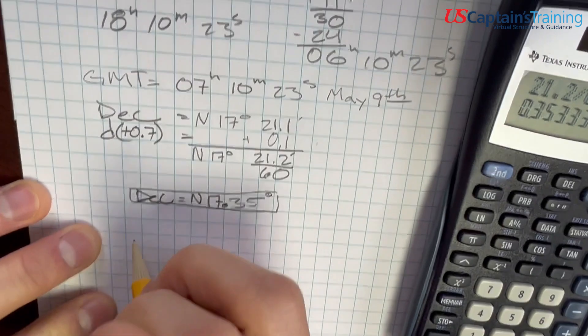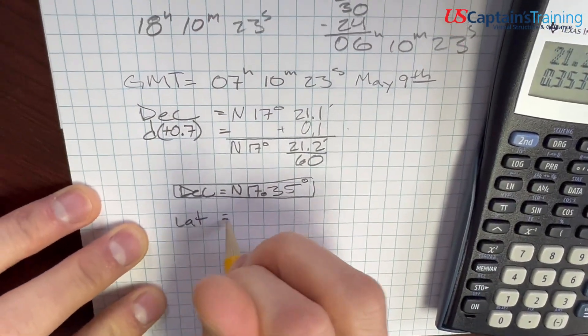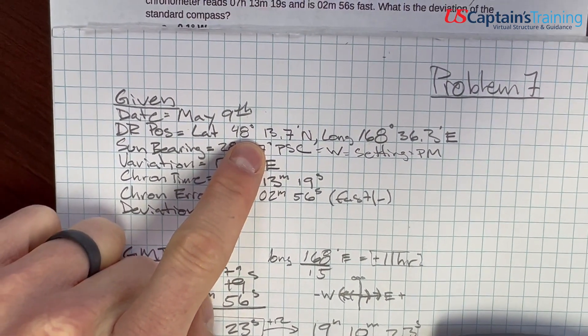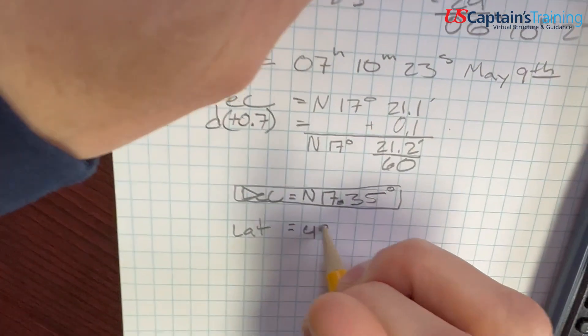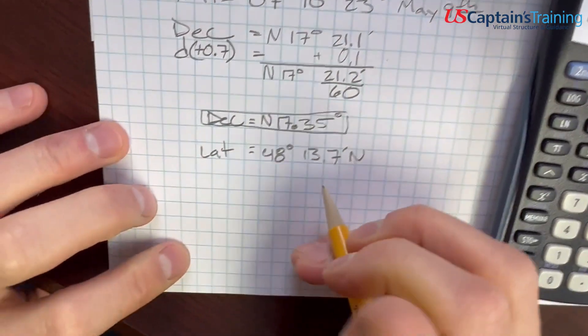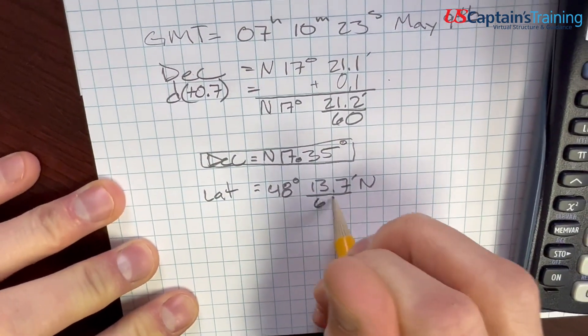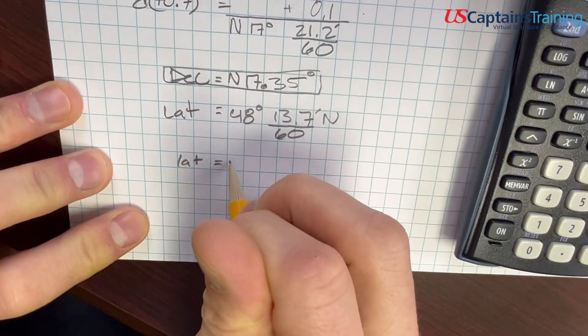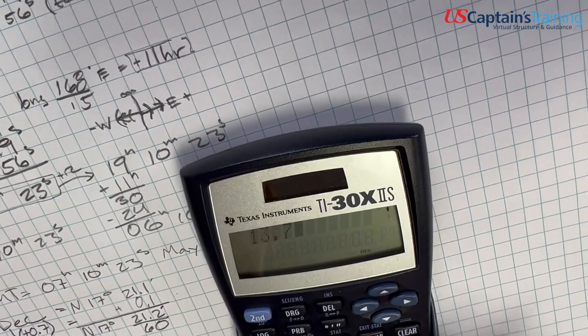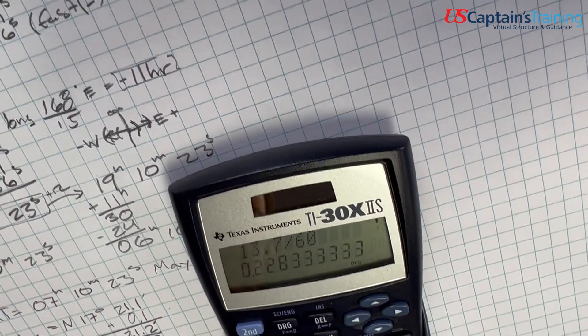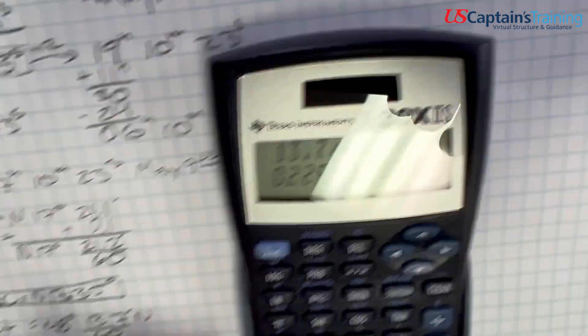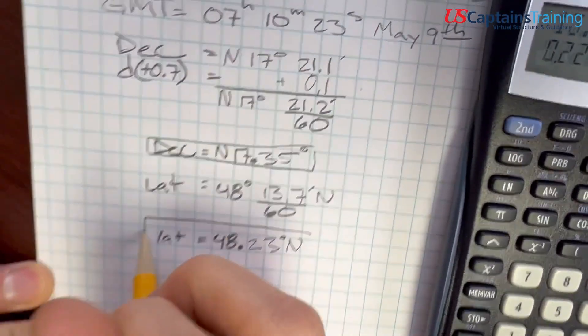And now we need to get our latitude. So our latitude equals, it was given in the problem, 48 degrees, 13.7 minutes north. And to put it in our formula, we need to get it all in degrees. So we divide it by 60. And we get our latitude equal to 48 point, 13.7 divided by 60 equals 0.23, 48.23 degrees north. This is the latitude we're going to use.